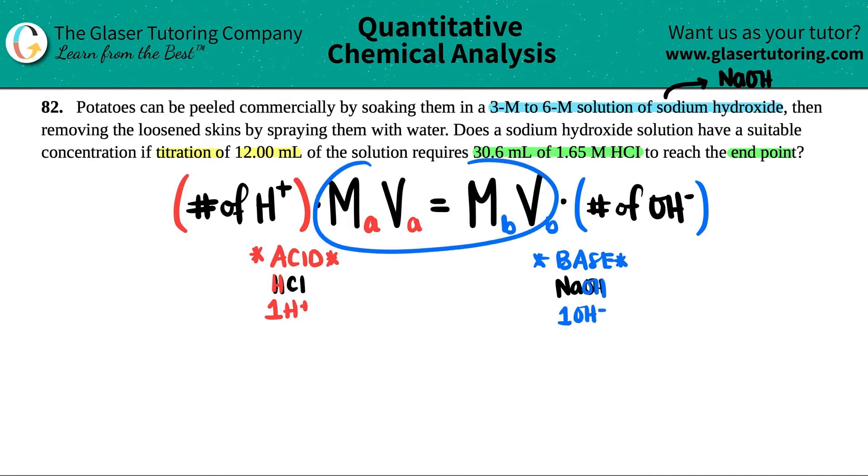Now let's see what numbers we have, what we're solving for, and then we'll get down to the math. So let's see, they told us specifically that we have 30.6 mL of 1.65 molarity. So they told us that my volume is 30.6 mL and my molarity was 1.65.